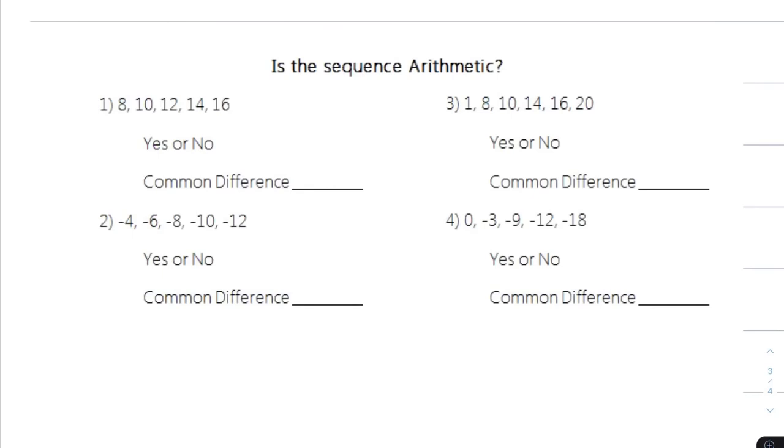All right, in these examples, the first thing you need to do is you're going to find the common difference. Plus 2, plus 2, plus 2. You need to find the common difference more than once, more than twice, because maybe it's not actually common. Maybe sometimes it changes. Okay, so d equals plus 2.